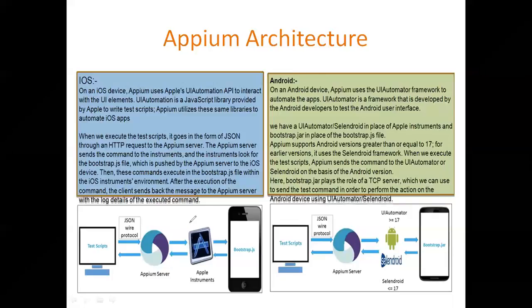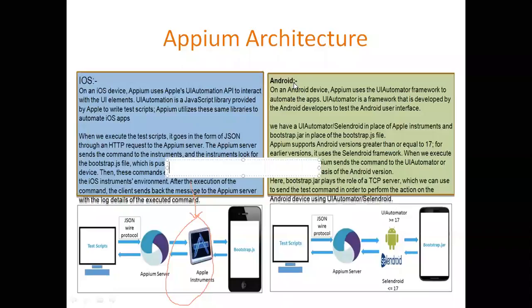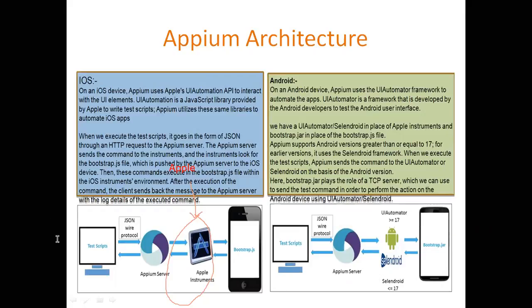The APM server takes the support of APL instruments — this is a tool developed by the APL company. The commands go to the APL instrumentation and then to the application; APL instruments sits in between. So commands don't reach the application directly — APL instruments receives those commands and executes them on the device. This describes the architecture of iOS.